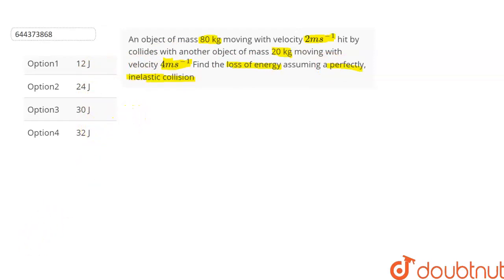Let's find out. Let the mass of body 1 be m1, it is equal to 80 kg, and the velocity of this body u1 is equal to 2 meters per second. Let the mass of second body be m2, it is equal to 20 kg, and the velocity of second body u2 is equal to 4 meters per second.